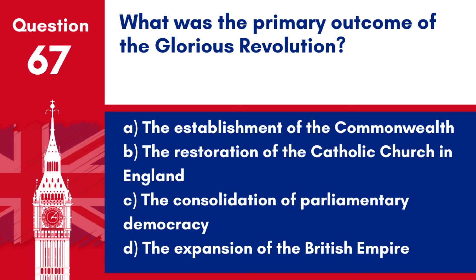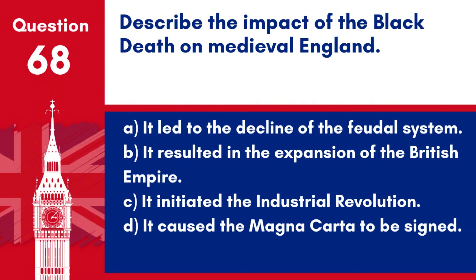Answer: c. The consolidation of Parliamentary Democracy. The Glorious Revolution of 1688 established constitutional monarchy in England, marking a shift towards parliamentary sovereignty.